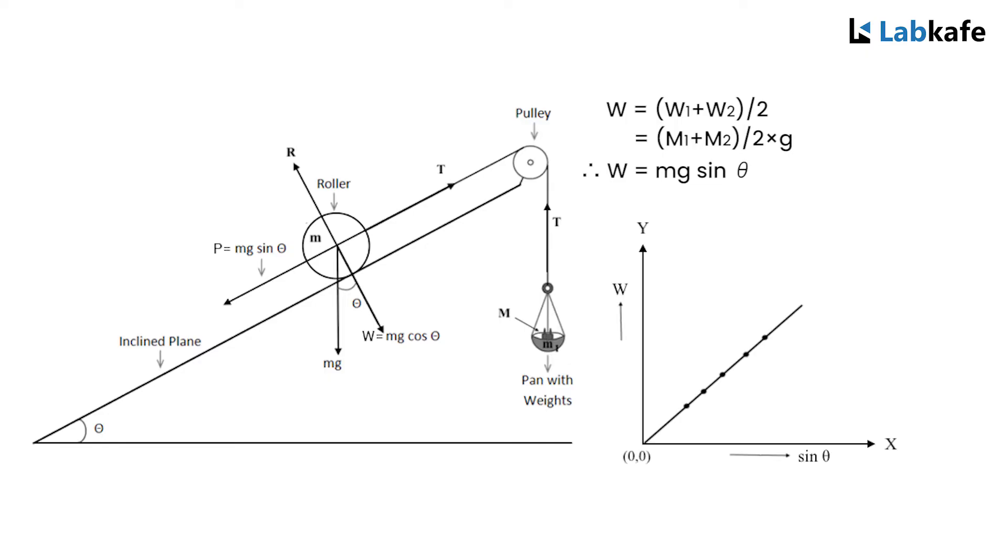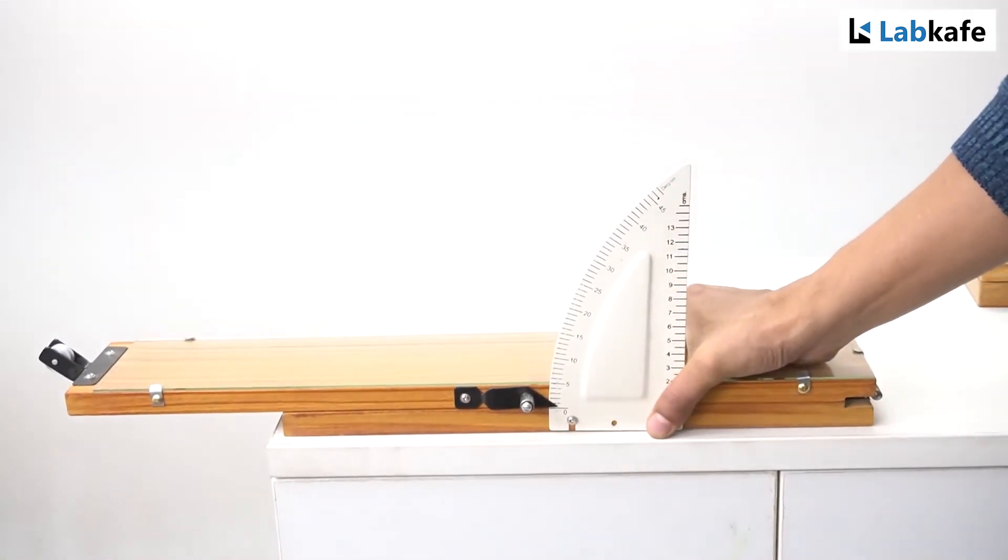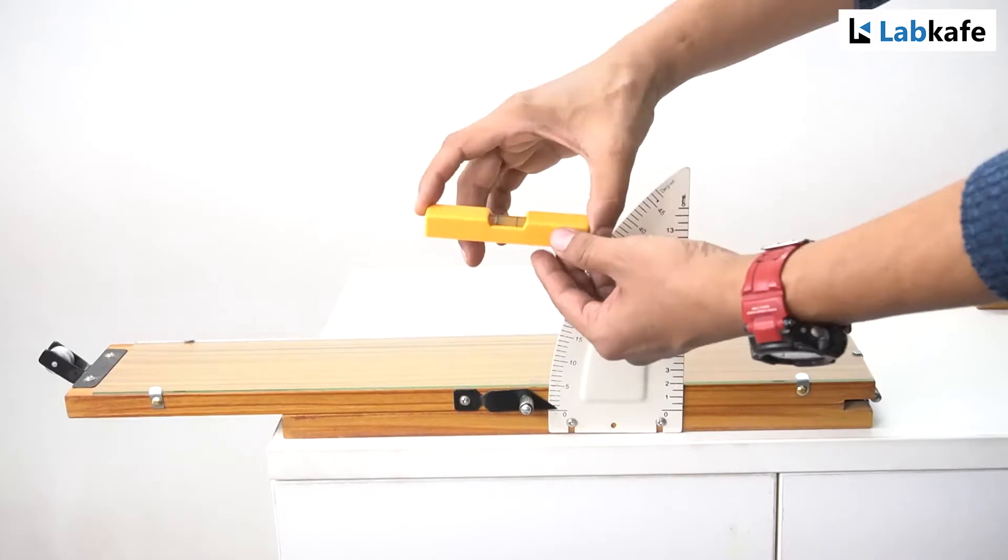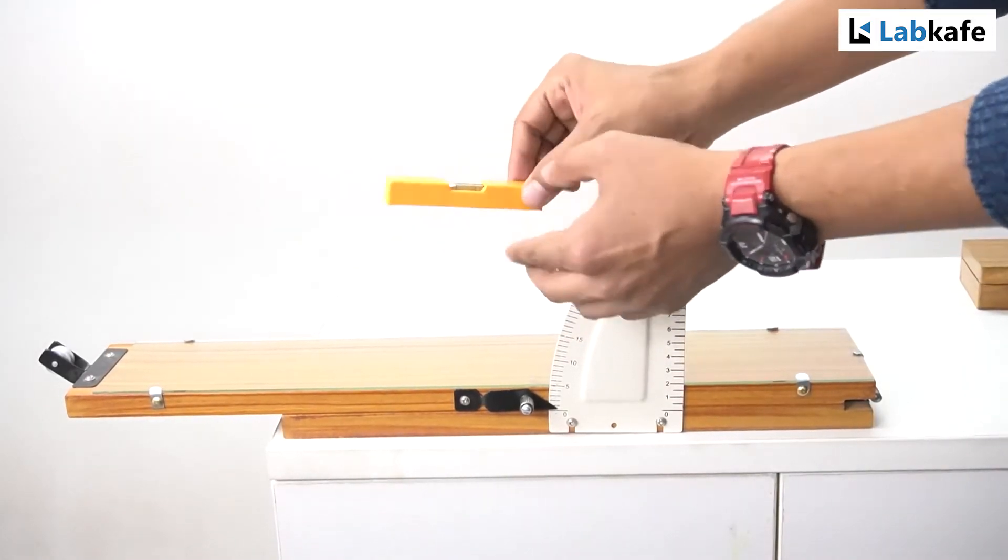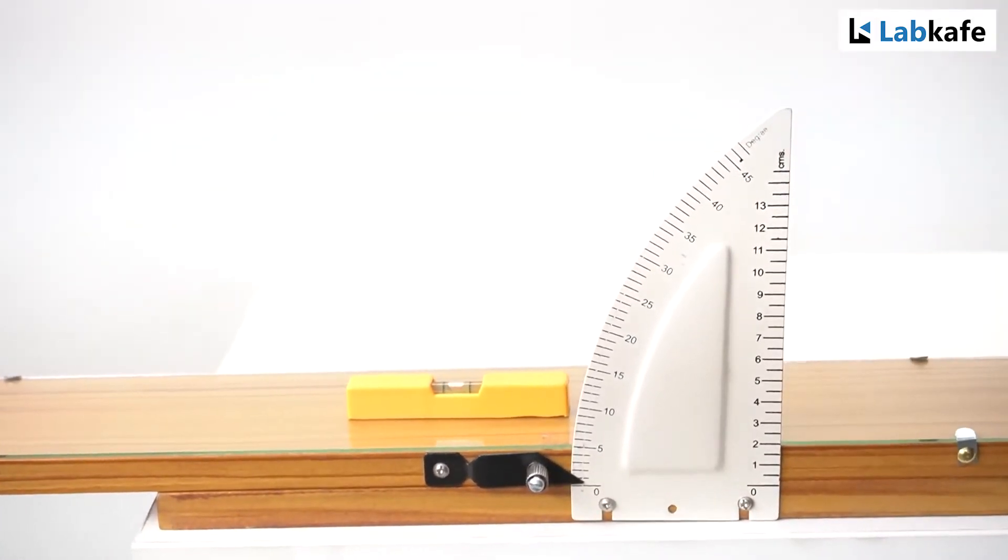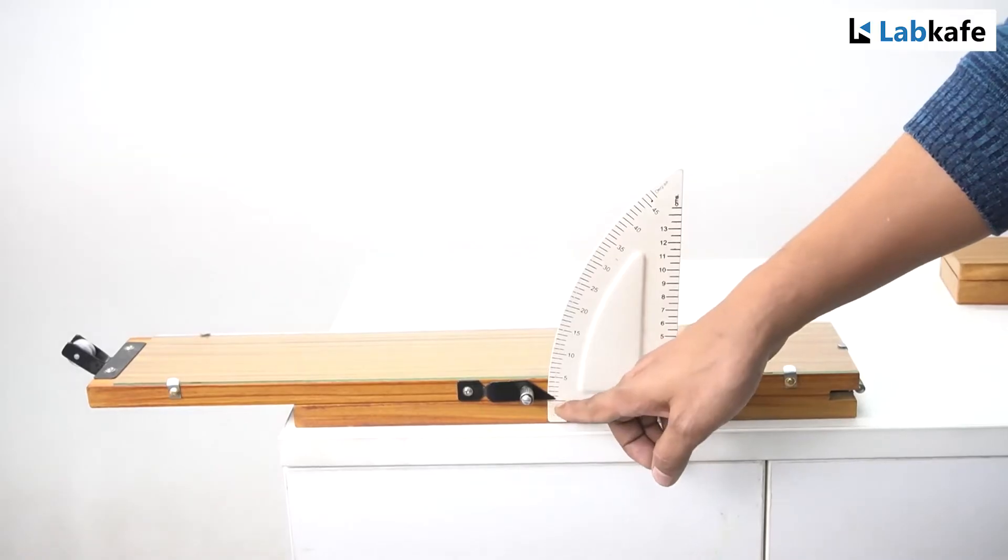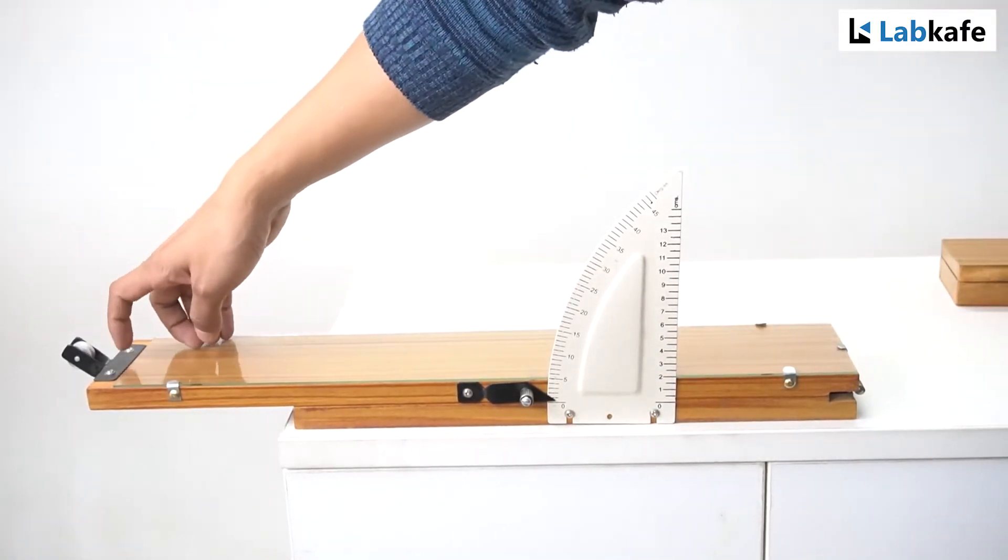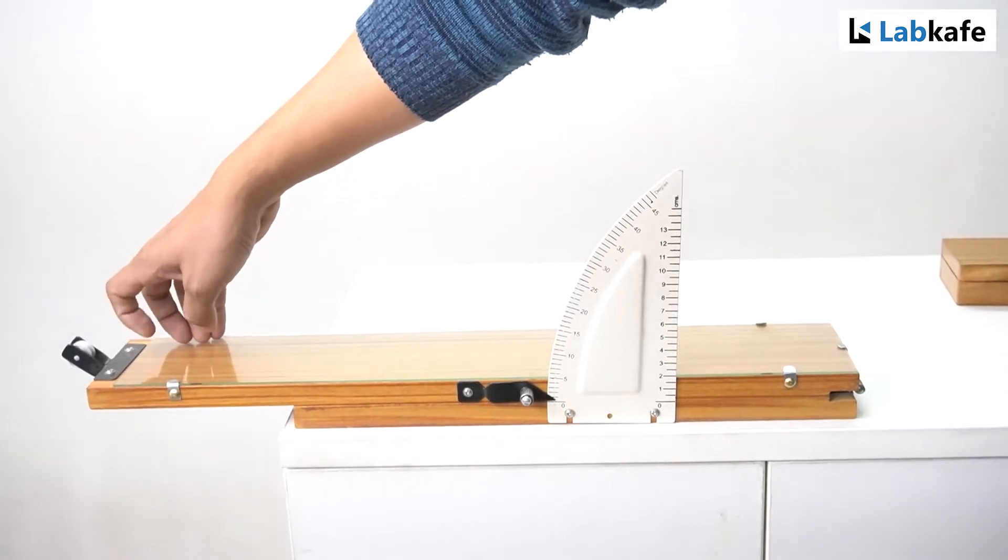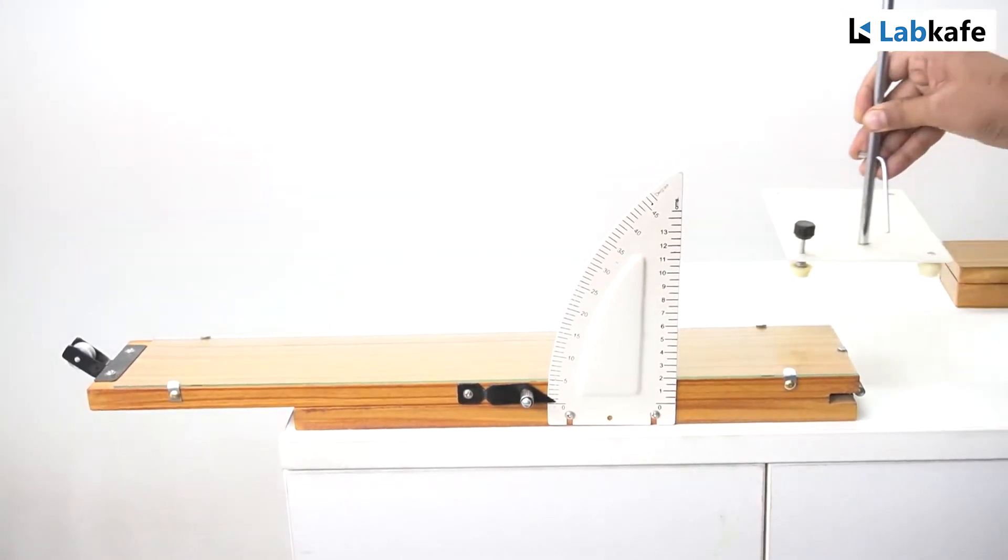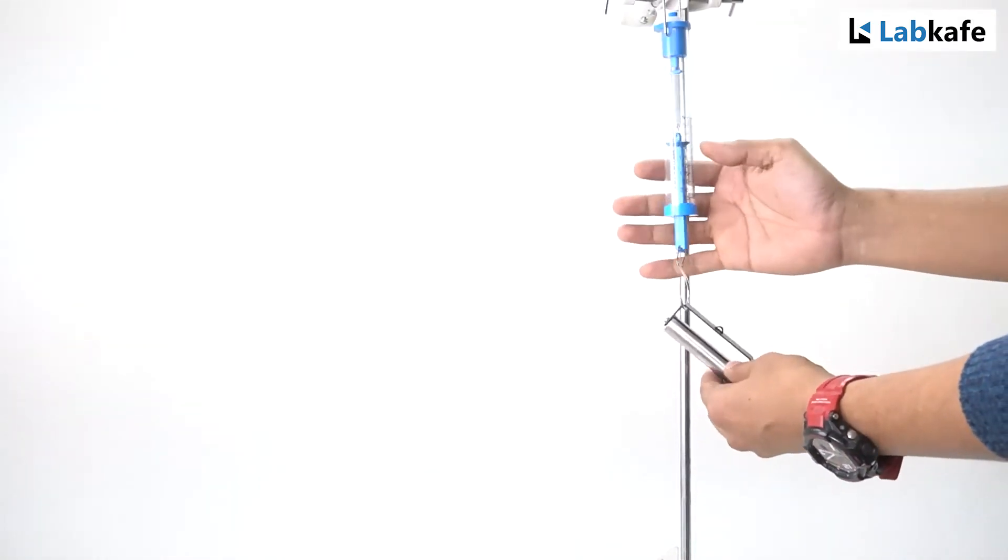Procedure: Arrange the inclined plane on a table. Make the base of the inclined plane horizontal with the help of a spirit level. The angle of inclination is now zero. Check the pulley and see if it is free from friction. If necessary, lubricate it with oil. Find the weights of the roller and the pan by spring balance and record them. The least count of the spring balance is 5 grams. Please check the previous video to understand how to calculate the least count of a spring balance.